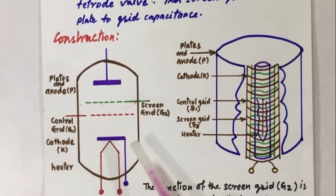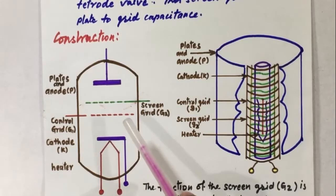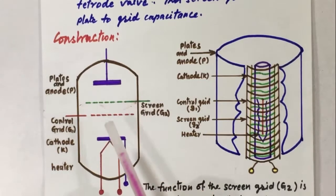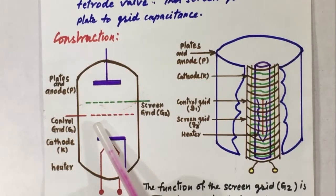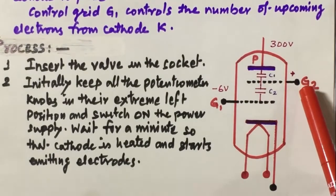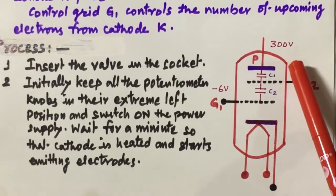As the electrons are emitting from the cathode, it is in our direct control through the control grid to determine how much amount of electrons reach the anode. We can control the negative potential of the control grid and get as many electrons as we want at the anode. The function of the screen grid G2 is to control the number of passing electrons through it and reduce the capacitance between the plate and G1.